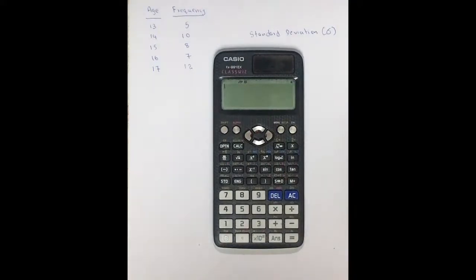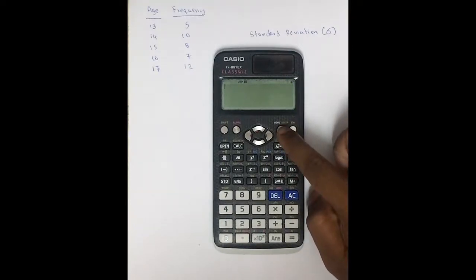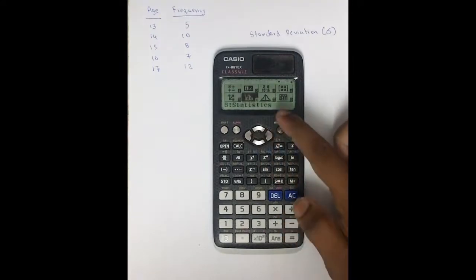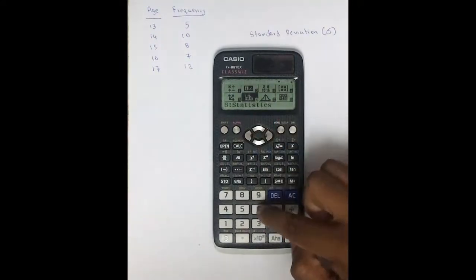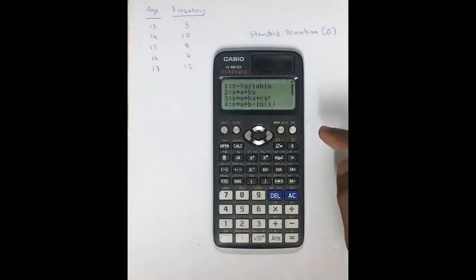Now you have to turn on Statistics mode in your calculator. Go to the Setup or Menu button. You can see that Statistics is listed as number 6. Press number 6 — your statistics mode is now on.